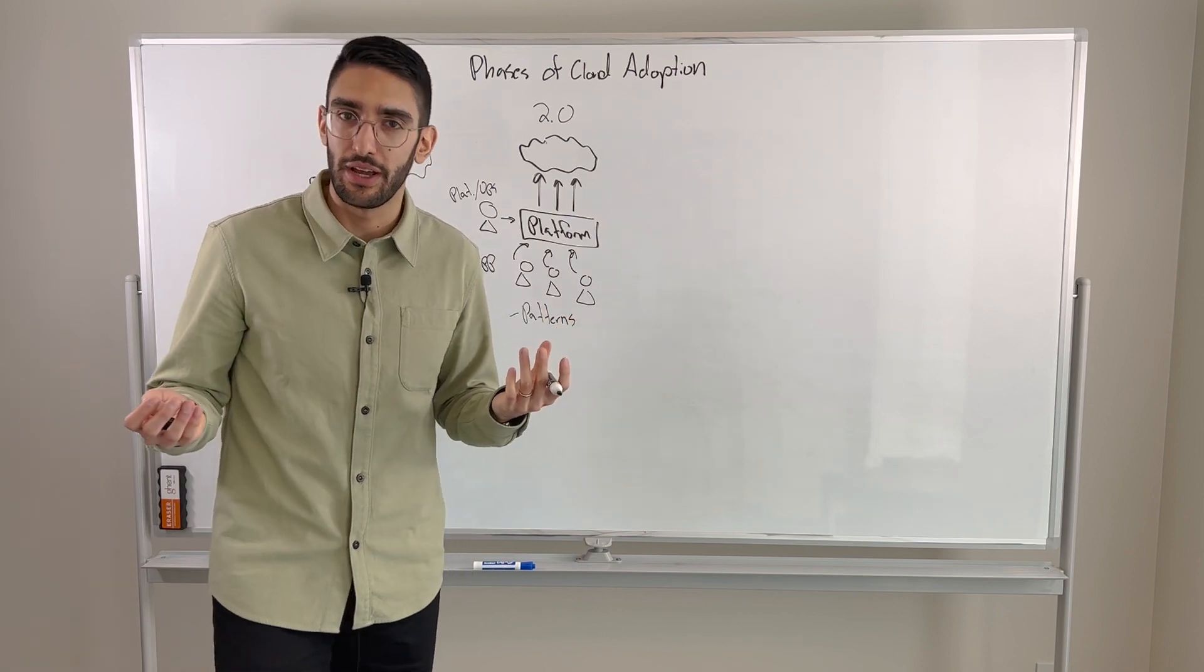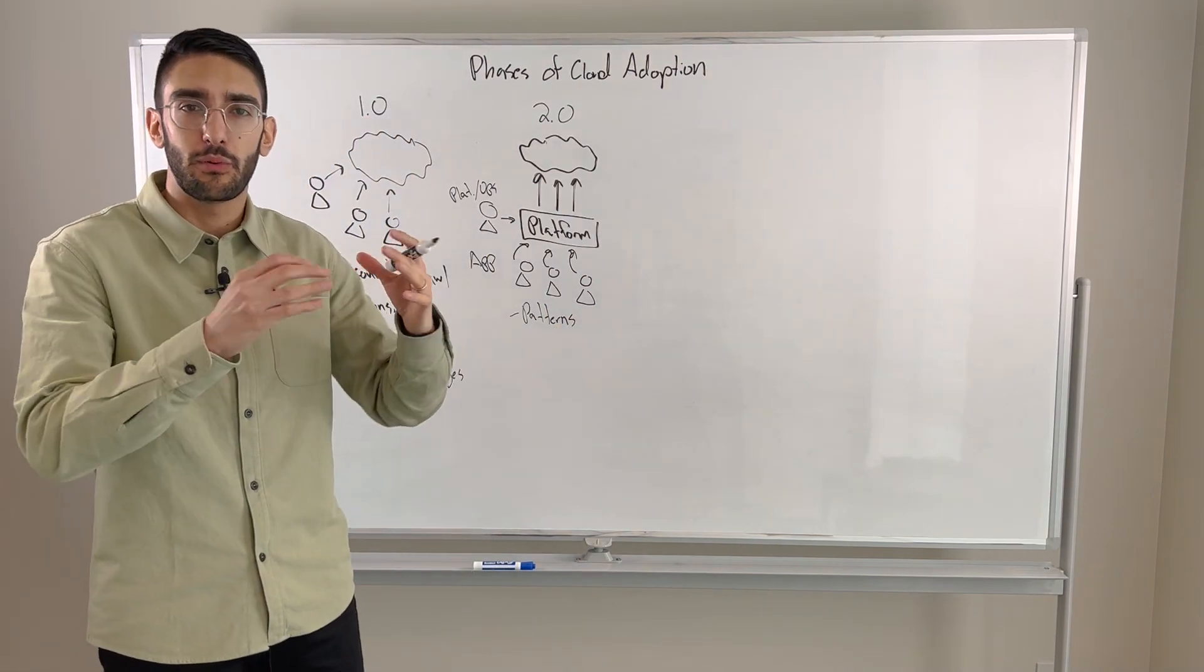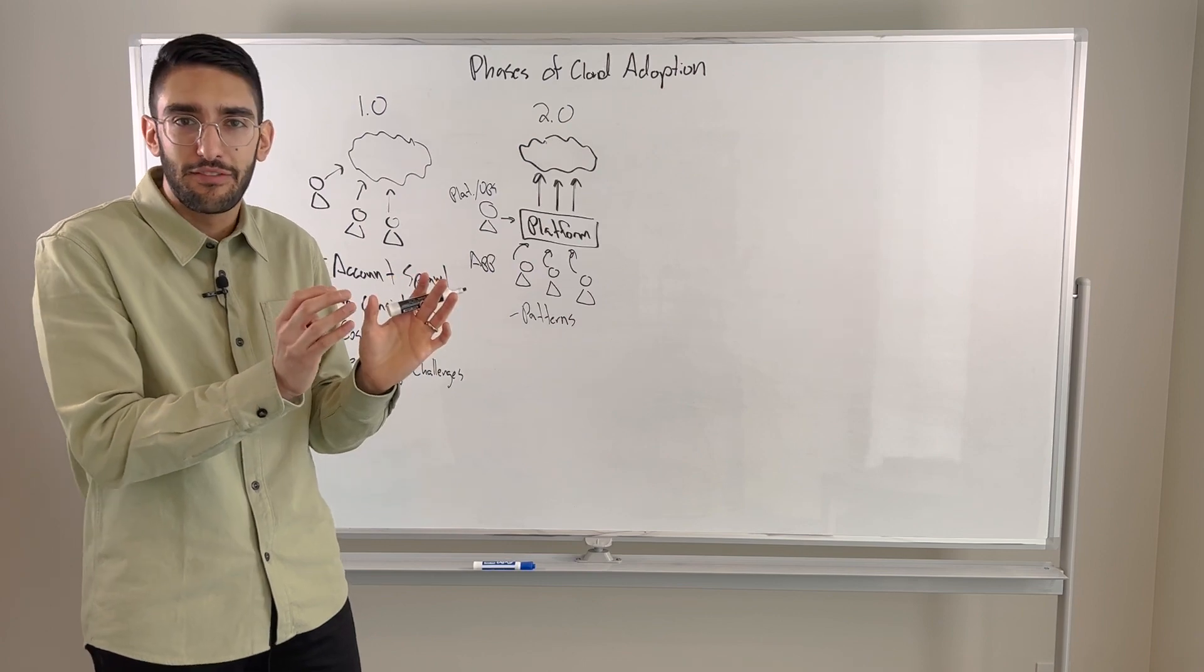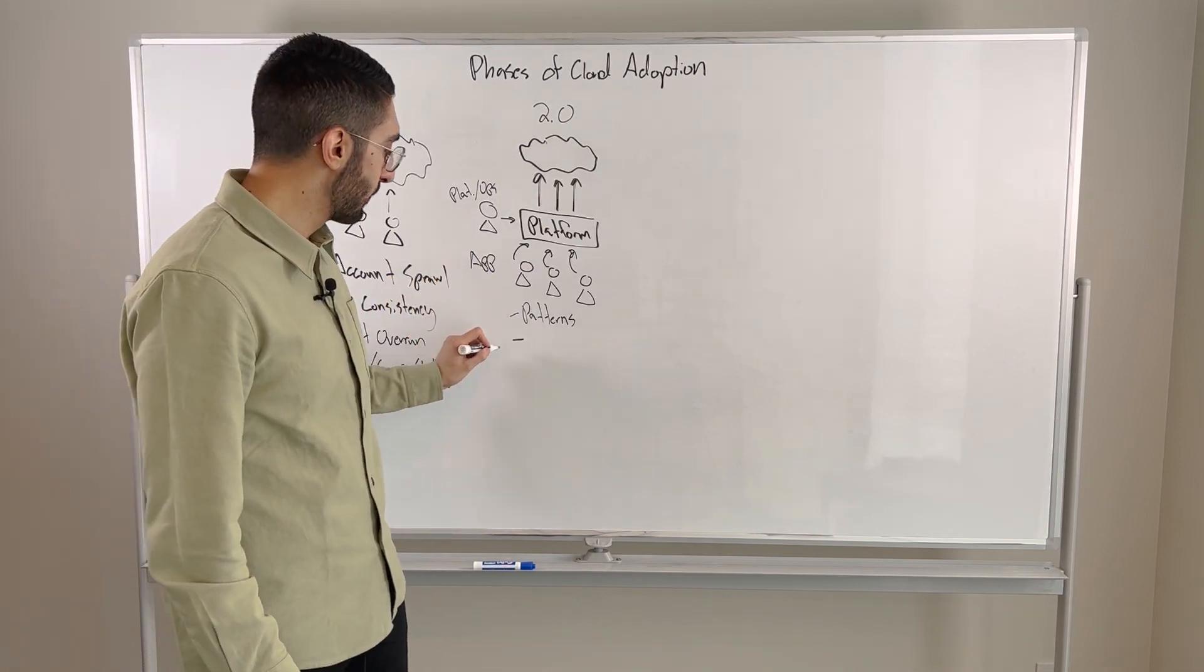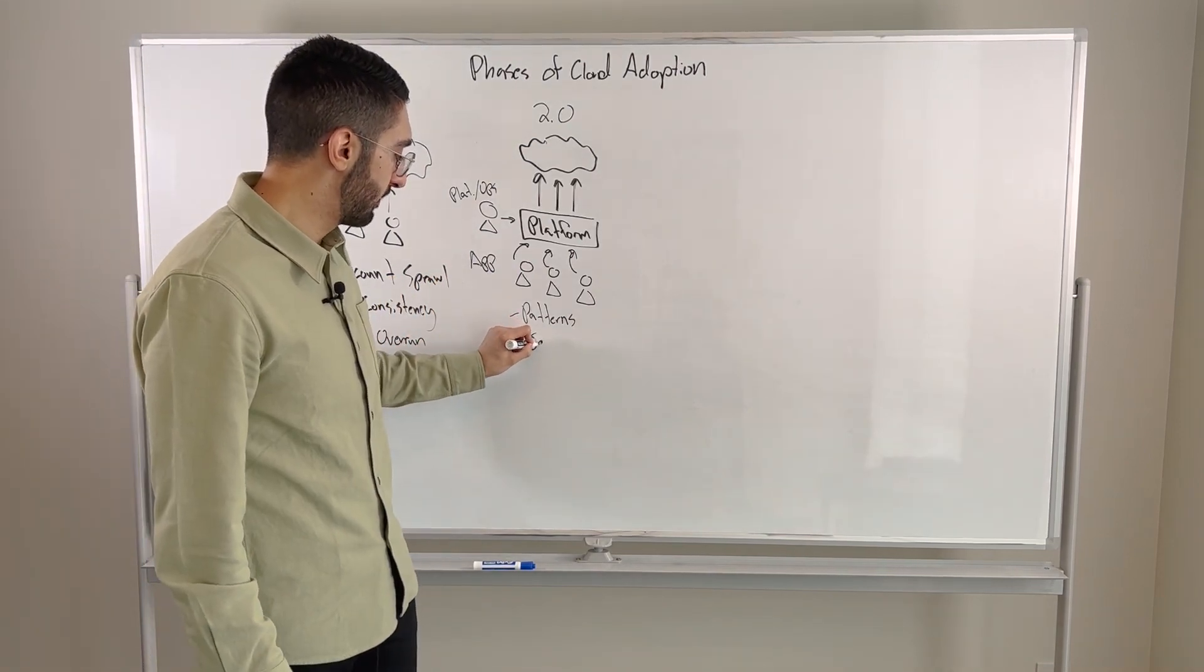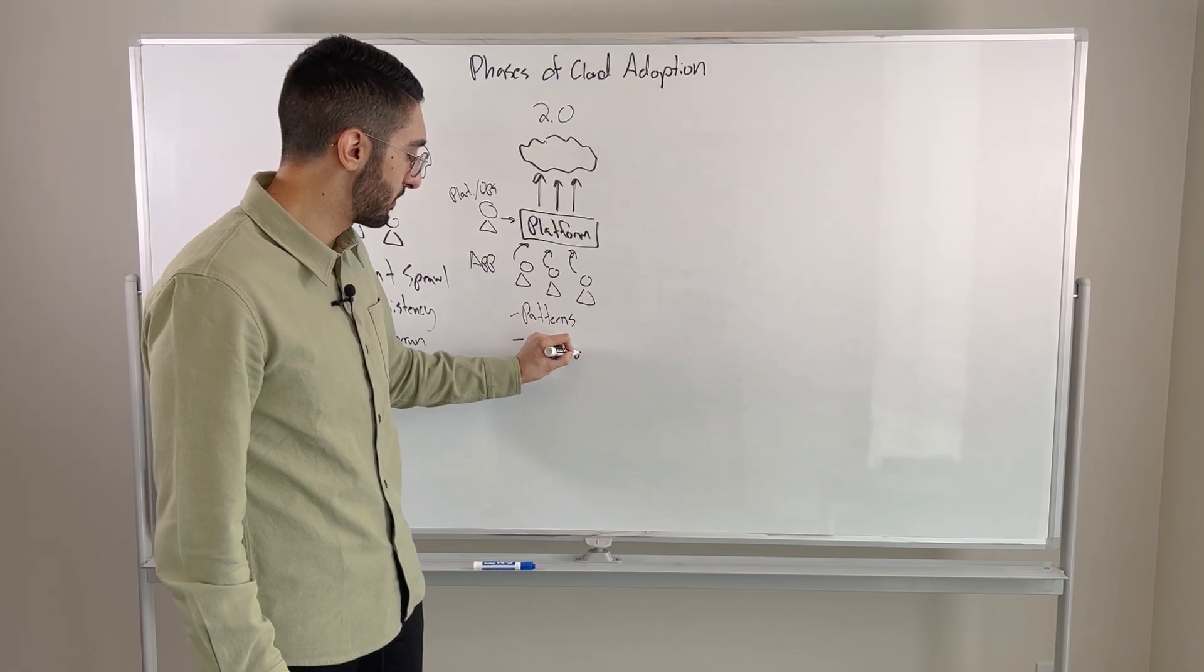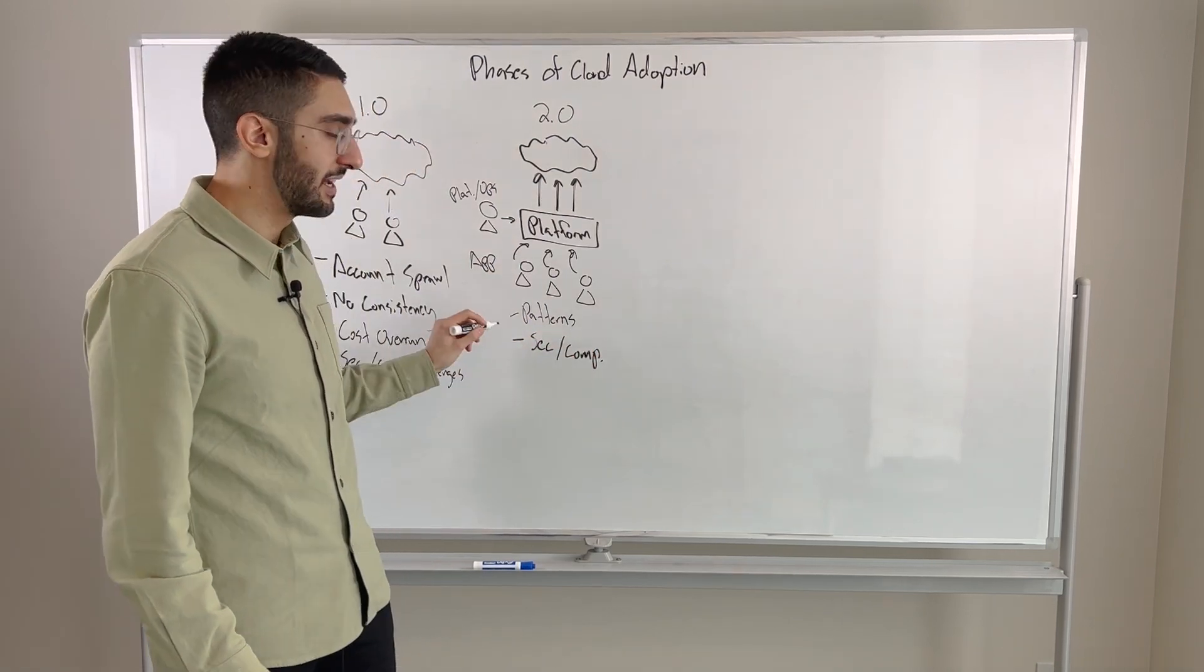So if every one of these application teams needs to deploy a Mongo database, I don't want to do it in 50 different ways. I want a consistent way that I'm doing that so I can put the right policy and controls around it, and I only have to manage at one time. That really becomes a key part of this, which is really from a security and compliance perspective, can I do it in a centralized way?